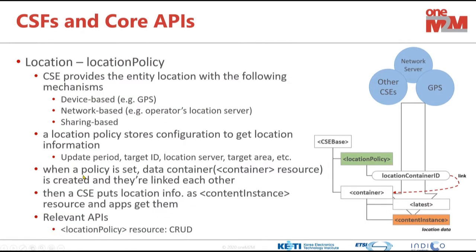For location, the oneM2M location feature allows us to create a location policy resource. As the name says, it is the location information acquisition policy — there are several settings for getting an entity's location. This is not the location information itself like latitude/longitude, but the policy to acquire that information. By the policy we can set the method, for example GPS of the device which hosts this location policy.